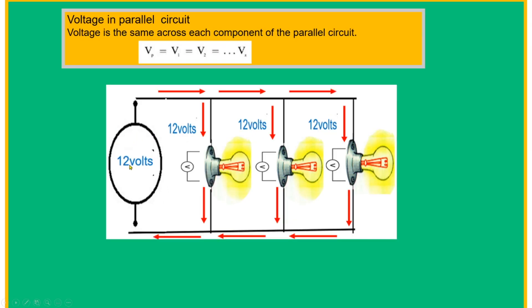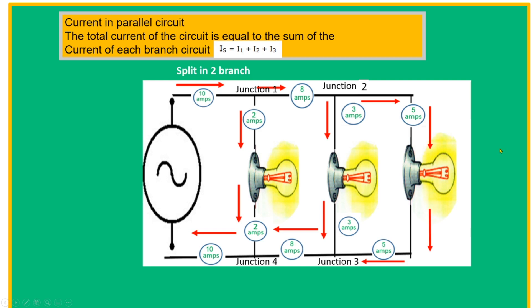If we have 12 volts here, our first lamp will also have 12 volts, our second lamp will also have 12 volts, and our third lamp will also have 12 volts. Because if we look at the diagram, whatever voltage we get at one point we also get at the parallel branches. Current in a parallel circuit: the total current of the circuit equals the sum of the current in each branch. IS equals I1 plus I2 plus I3.